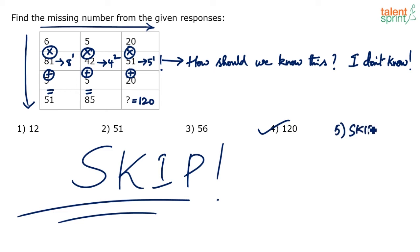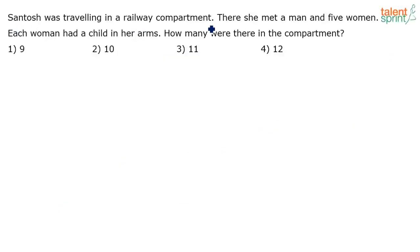Ideally, technically the right answer is option 4: 120. Santosh was traveling in a railway compartment. There she met a man and five women. Each woman had a child in her arms. How many were there in the compartment?